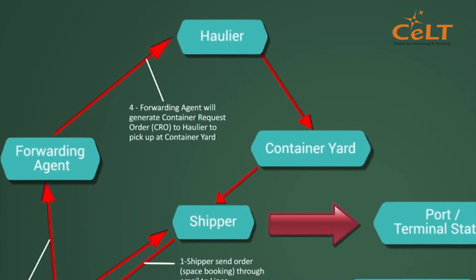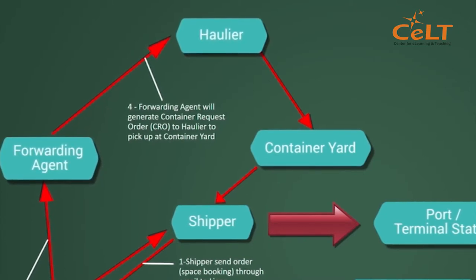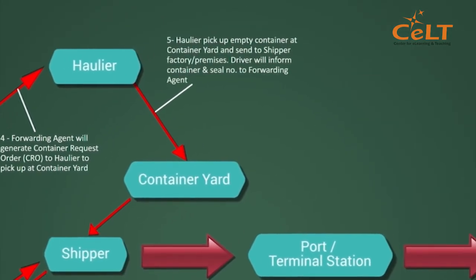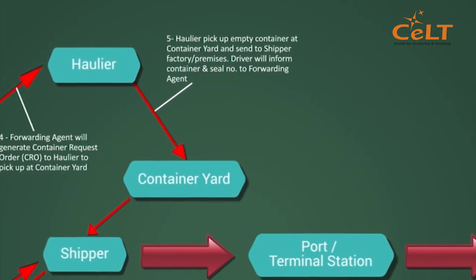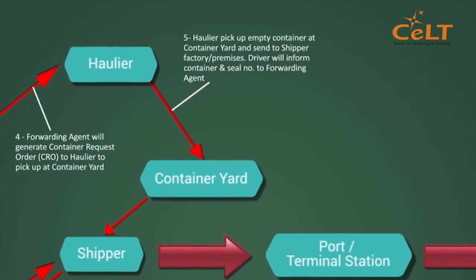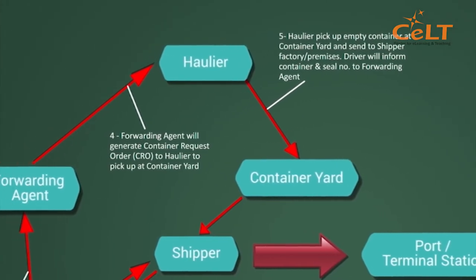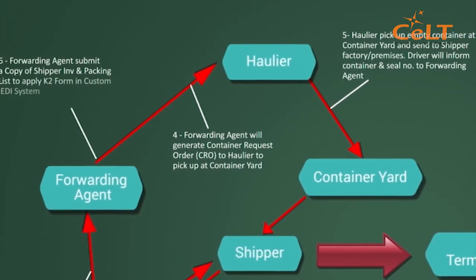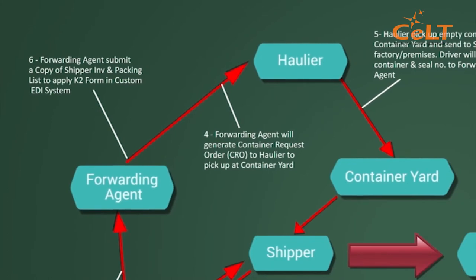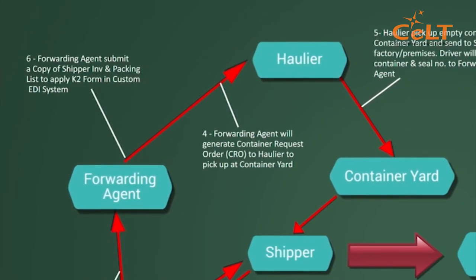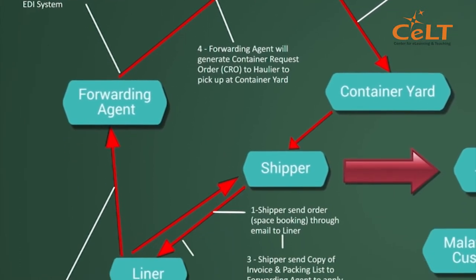Step 4: Forwarding agent will generate Container Request Order (CRO) to haulier to pick up at container yard. Step 5: Haulier picks up empty container at container yard and sends to shipper factory or premises. Driver will inform container or seal number to forwarding agent. Step 6: Forwarding agent submits a copy of shipper invoice and packing list to apply K2 form in custom EDI system.